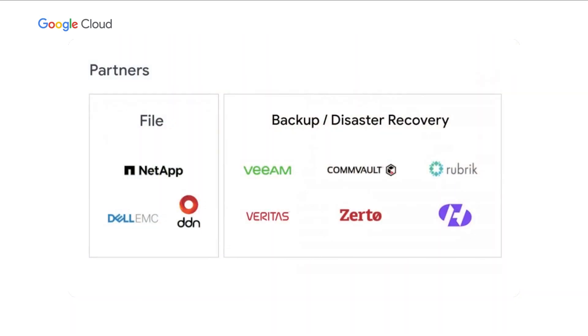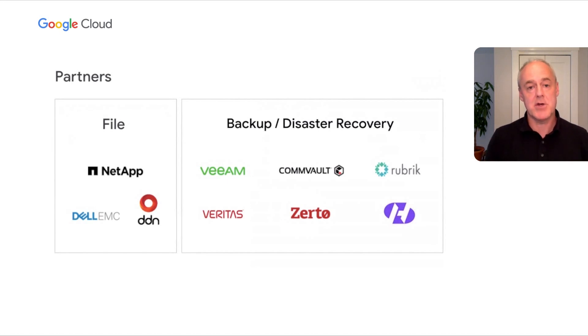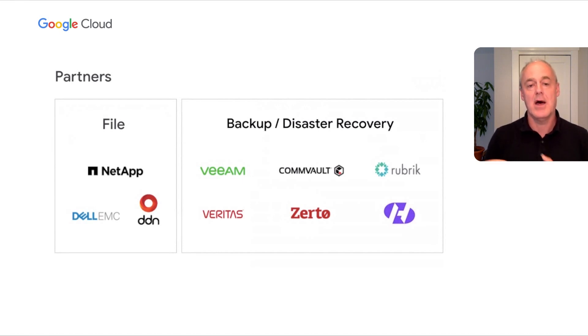We believe strongly in having a strong partner ecosystem with GCP — our customers have choice and we want to support them. For file storage, we have rich partnerships with NetApp offering SMB capabilities, Dell EMC for very high performance and scale, and DDN for Lustre. For backup and disaster recovery, we also have a rich set of options: we recently integrated with Veeam so you can back up directly to GCS as a target in the cloud, and Commvault offers a rich set of capabilities around backup and data protection for GCVE, our VMware service on GCP.